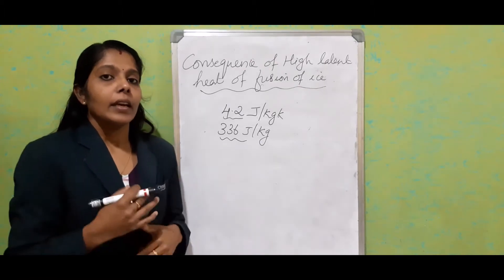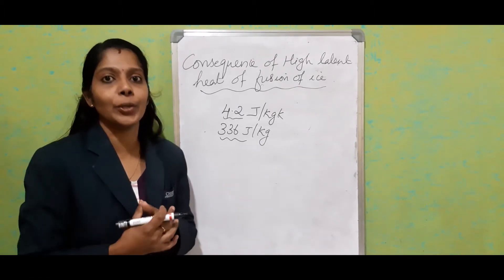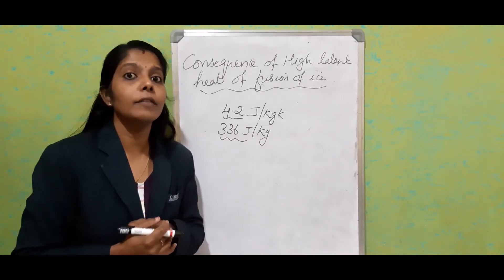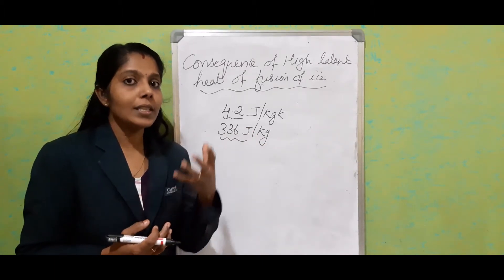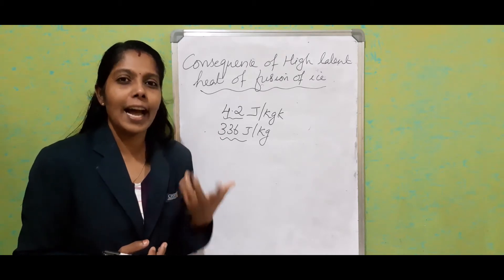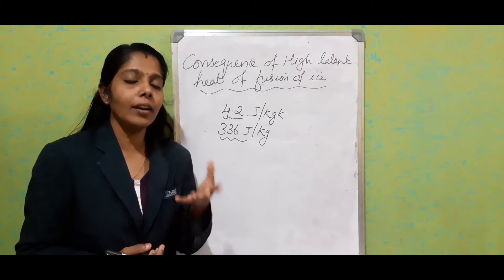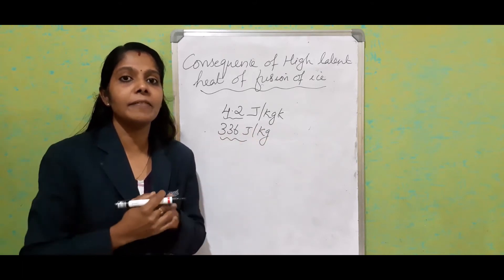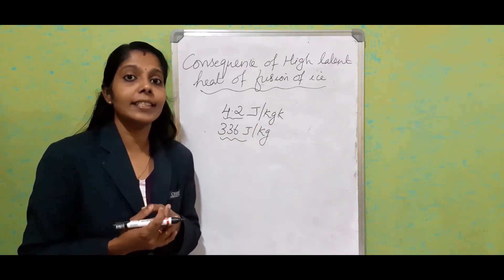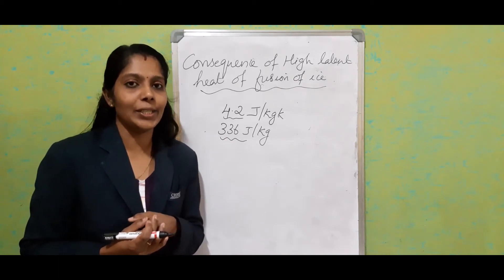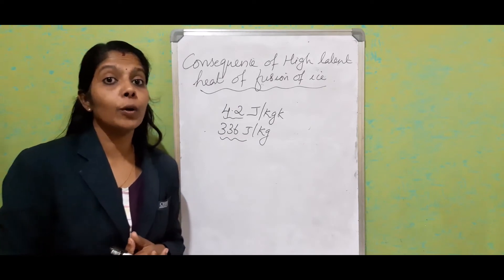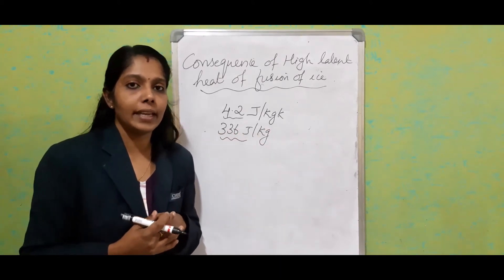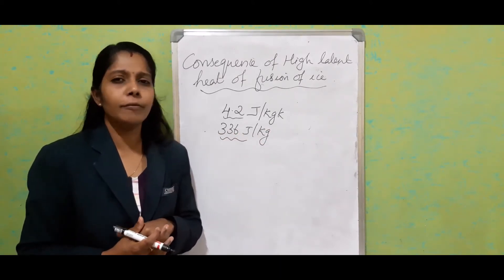In cold countries, or during a hail storm, soon after the hail storm the temperature of the atmosphere suddenly falls down. The reason is that hailstones are ice, and after the hail storm the ice starts melting. During the melting process, it absorbs energy from the surrounding atmosphere, so the surrounding temperature suddenly drops. Similarly, when ice from a frozen lake starts melting, it absorbs energy from the surroundings, causing the surrounding temperature to fall.